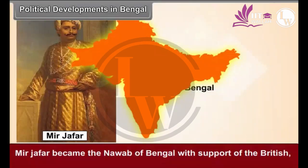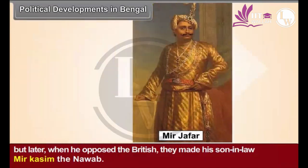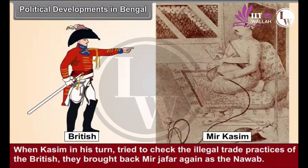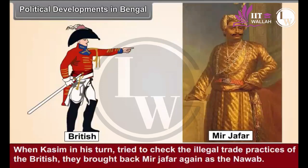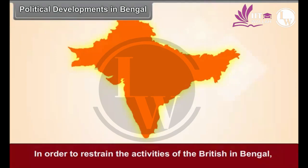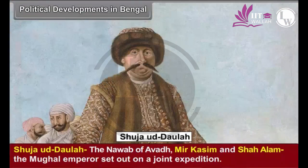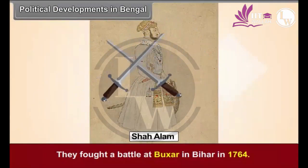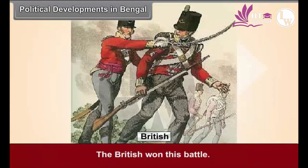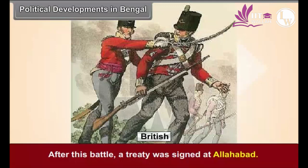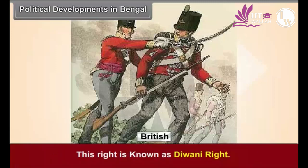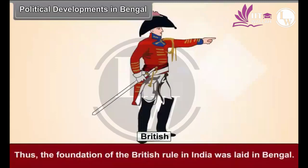Mir Jafar became the Nawab of Bengal with British support. But later, when he opposed the British, they made his son-in-law Mir Qasim the Nawab. When Qasim in his turn tried to check the illegal trade practices of the British, they brought back Mir Jafar again as the Nawab. In order to restrain the British, Shuja Uddaula the Nawab of Awad, Mir Qasim, and Shah Alam the Mughal Emperor set out on a joint expedition. They fought a battle at Buxar in Bihar in 1764, which the British won. After this battle, a treaty was signed at Allahabad, by which the British secured the Diwani right to collect revenue in Bengal. Thus, the foundation of British rule in India was laid in Bengal.